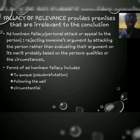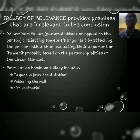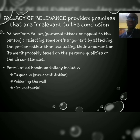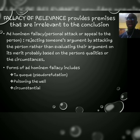With fallacies of relevance, they provide premises but the premises are irrelevant to the conclusion — the premise doesn't support the conclusion at all. One common example is the ad hominem fallacy, also called personal attack or appeal to the person. This fallacy is committed when, in an argument, you put the argument down and attack the person making it, either based on their physical characteristics or the circumstances surrounding that individual.